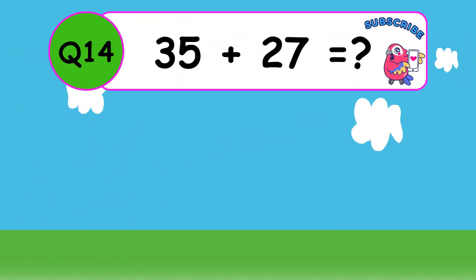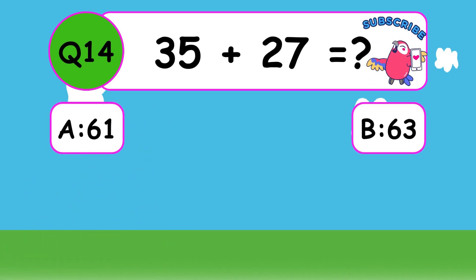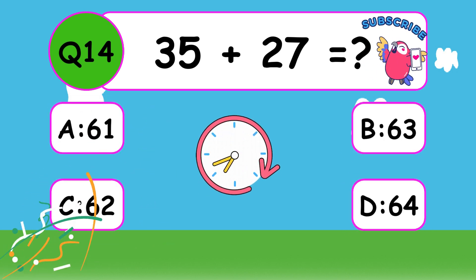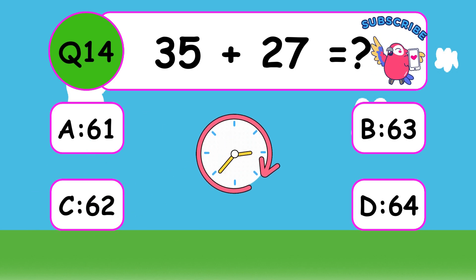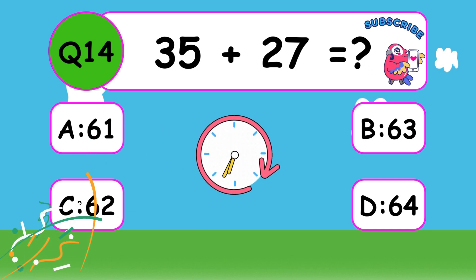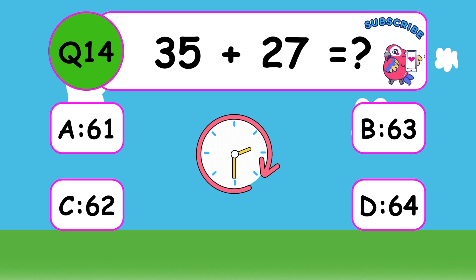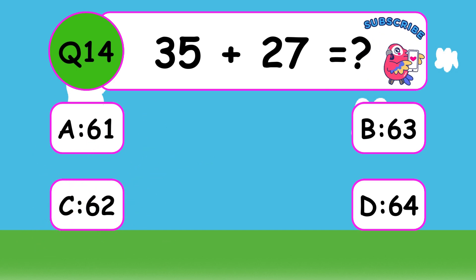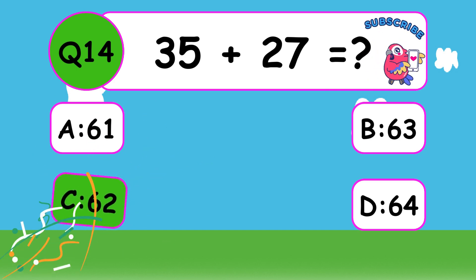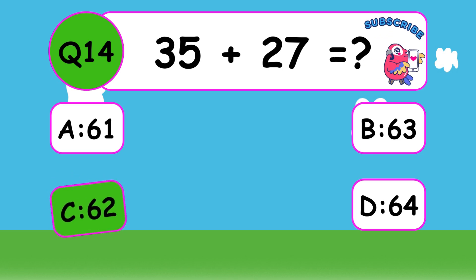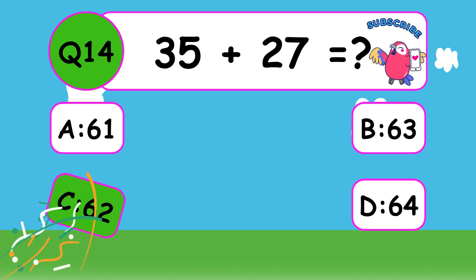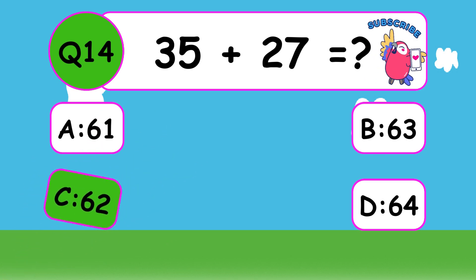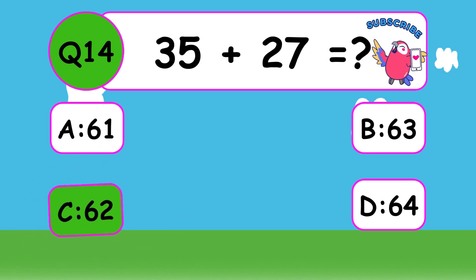What is 35 plus 27? The answer is C, 62. 35 plus 27 equals 62.